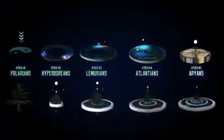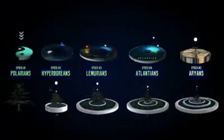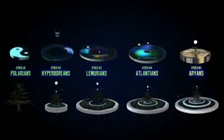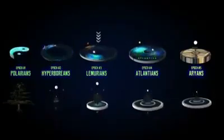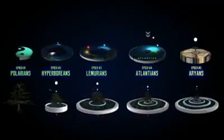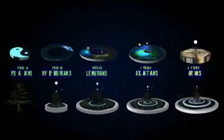In summary, we have five epochs so far. The master race, the Polarians; 24,000 years later, the Hyperborean realm was created; 24,000 years after that, the Lemurian realm was created; then the Atlantean; then the Aryan. And according to many ancient scriptures, mythologies and mystics, there are two more epochs to come — meaning seven epochs, seven earthly realms, and seven root races.